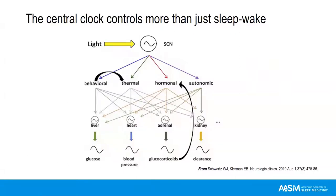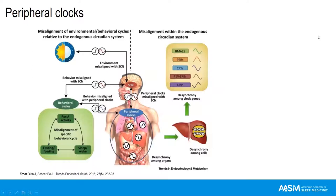The central clock in the SCN controls more than sleep and wake — it controls feeding, core body temperature, hormone secretion like melatonin and cortisol, and autonomic function. In addition to the central clock, we have peripheral clock machinery throughout the cells of all our organs. This is relevant because sleep-wake and behaviors can be misaligned with the light-dark cycle, the SCN can be misaligned with behaviors, the central clock can be misaligned with peripheral clocks, and there can be desynchrony between different clocks within organs. Circadian disruption may be the manifestation of — and likely influences — many disease states, given this carefully coordinated system.